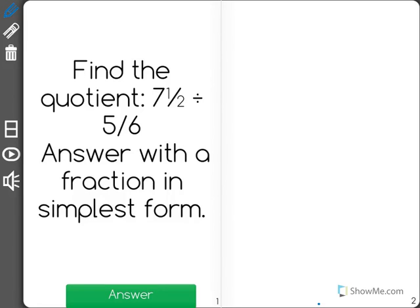Find the quotient, 7½ divided by 5/6. Answer with a fraction in simplest form. So what this looks like when it's all on one line is 7½ divided by 5/6.